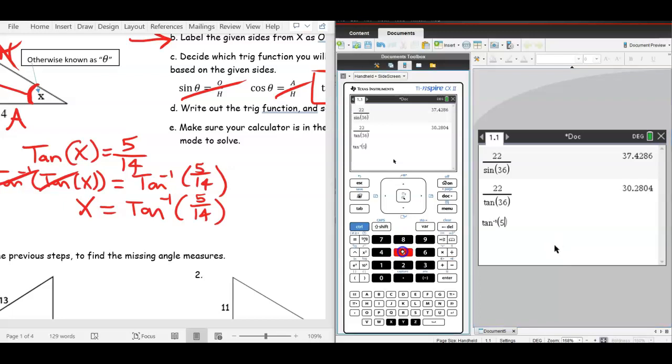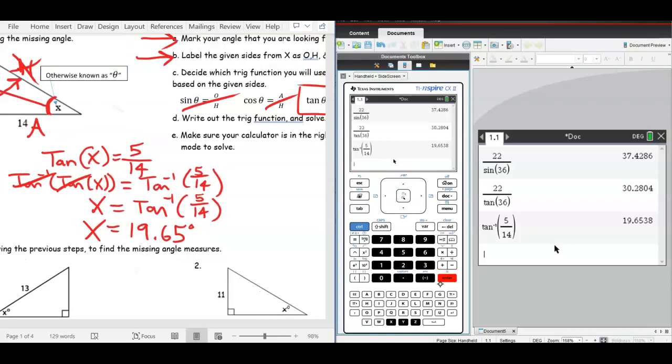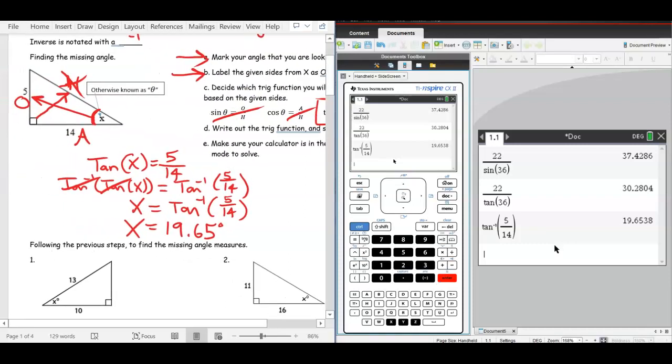And then you can type 5 over 14. You can type it as 5 divided by 14, or you can do 5, control, divide, 14. Either way, hit enter. I get 19.653. The 3 makes the 5 stay the same. So, 19.65. And since it's an angle, my units of measure are degrees. 19.65 degrees.